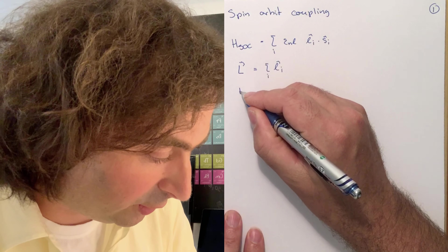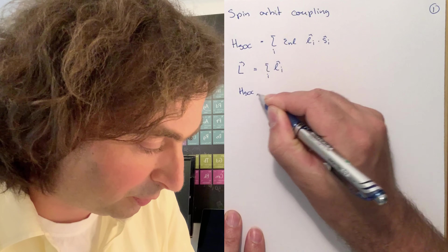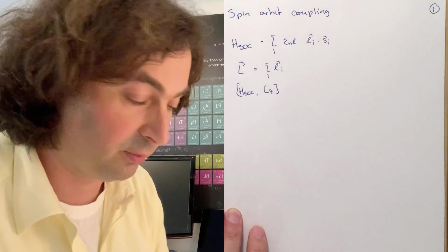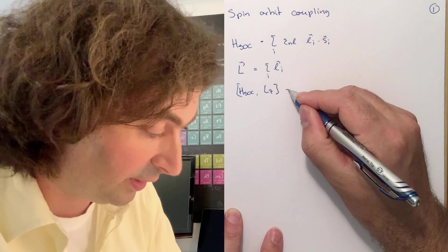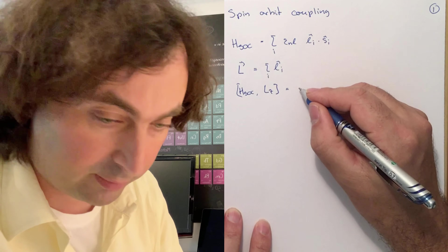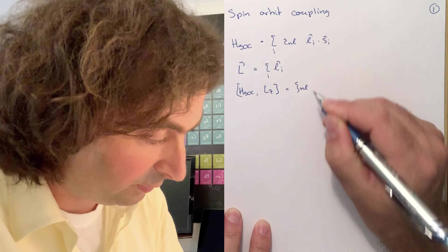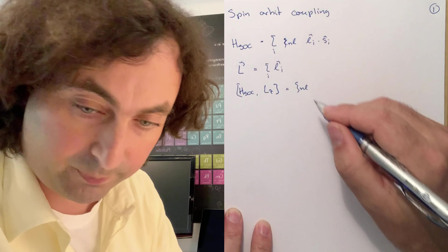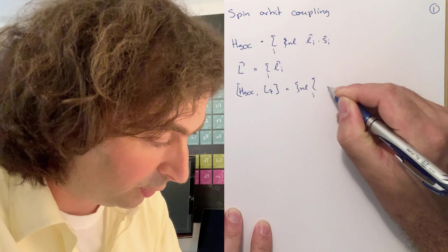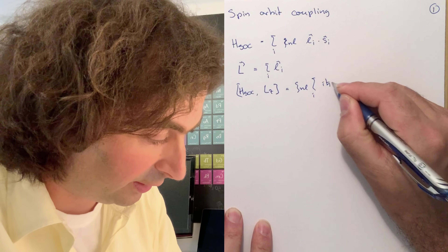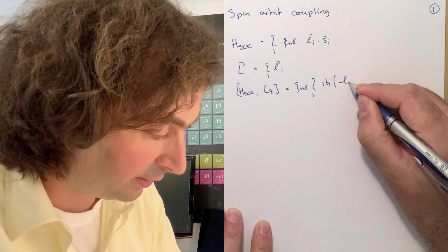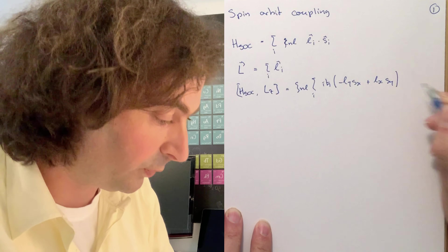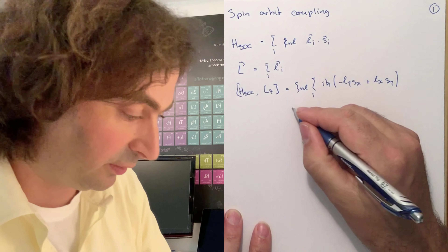If we look at the commutator between the spin-orbit coupling Hamiltonian and the z-axis component of the angular momenta, then we find that it is proportional to the coupling constant times sum over all electrons, i·ħ times (−ly·sx + lx·sy), which is non-zero.